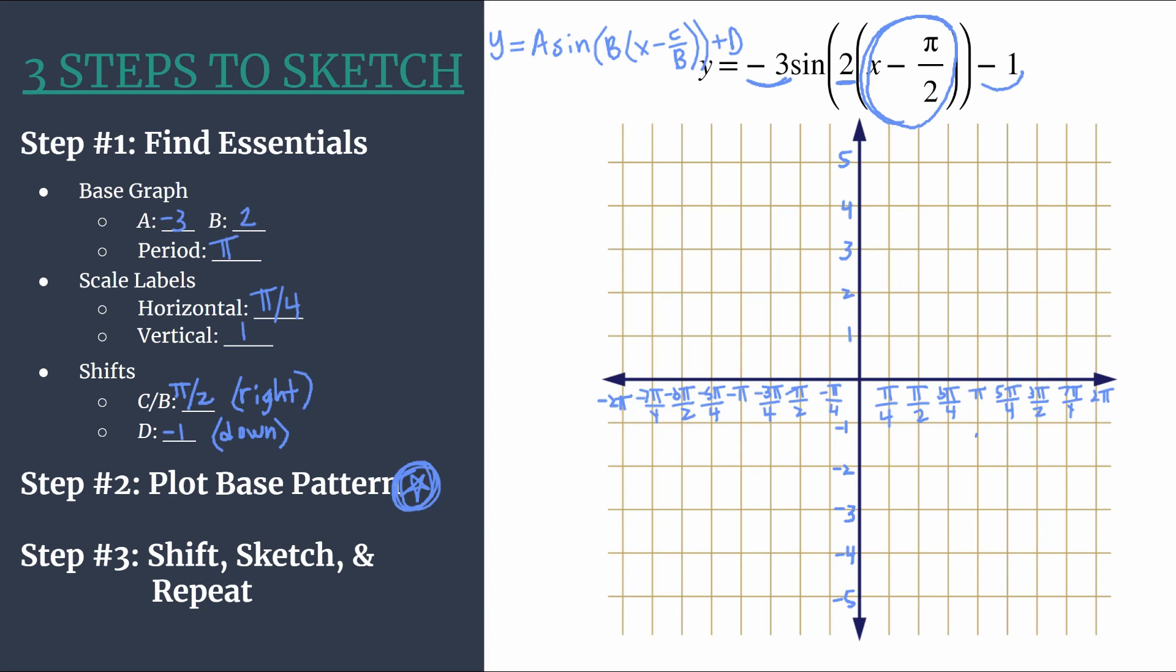So a couple things here. First, remember when you plot the base pattern using this method, you should do it lightly or in a color that's different from your final graph. So I'm going to use light blue here. This is just a temporary graph that we'll actually work to shift from to get to our final graph. I also am noticing the star. Remember that is how we are reminding ourselves that our graph is actually a reflected graph. It had a vertical reflection or a reflection over the x-axis.